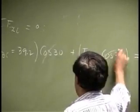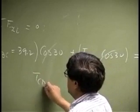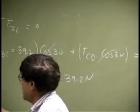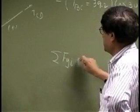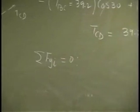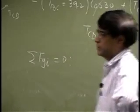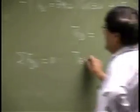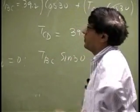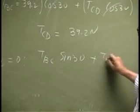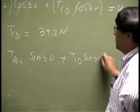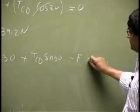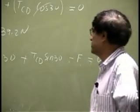And basically this cancels out and it gives you TCD as 39.2 newtons. Then we're going to sum the force in the y direction and that should go to 0. So you're looking at the component here that's TBC sine 30. Then you have another component which is TCD sine 30. Then you have a force F going down this negative F and that should go to 0.